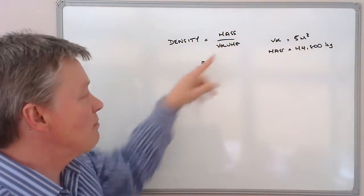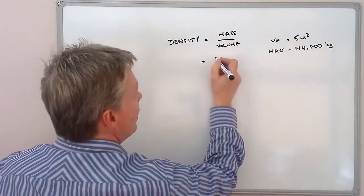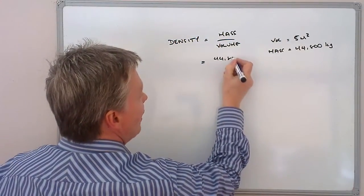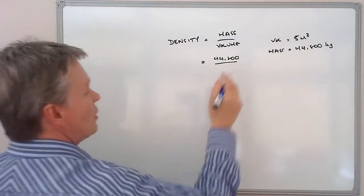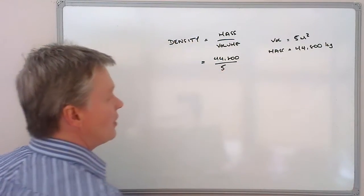So density equals mass divided by volume. The mass they've given us is 44,800 divided by volume, which is 5 metres cubed.